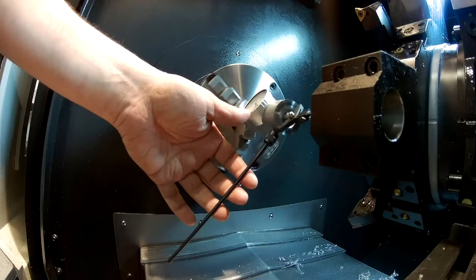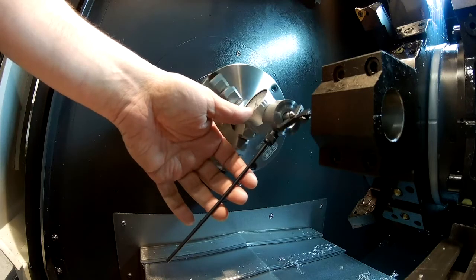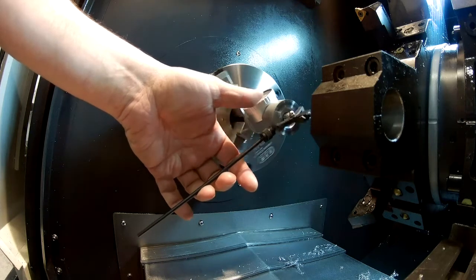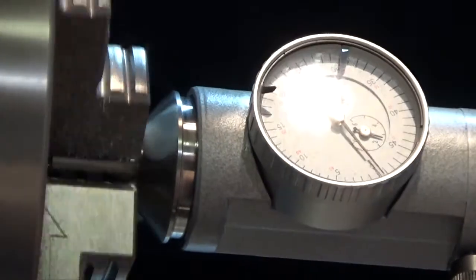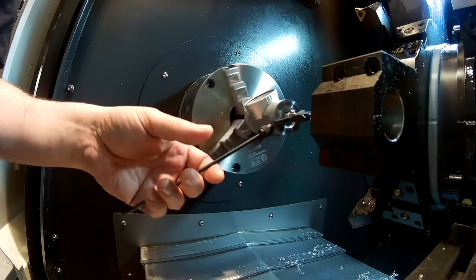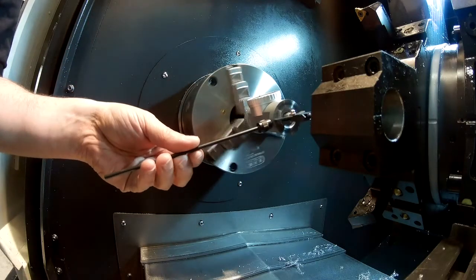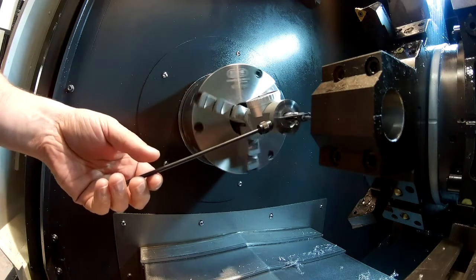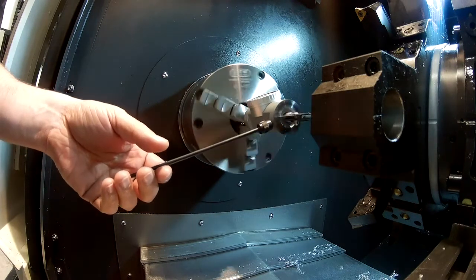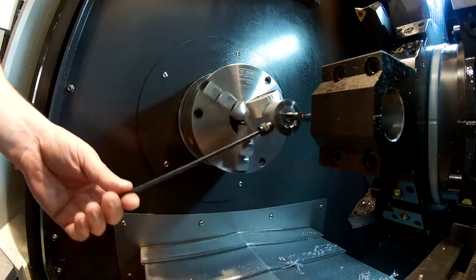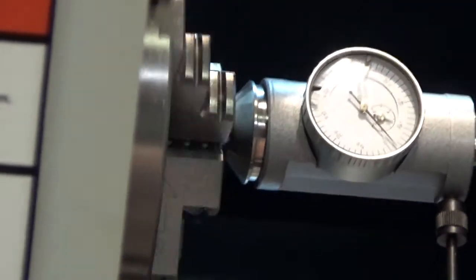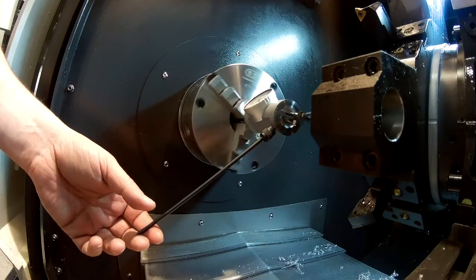So we actually have, this is a half a thou indicator, so we have about a thou runout. We're actually good in the, you actually need to shim the tool holder up a little bit, but for most jobs I mean we're going to be well within tolerance. A half a thou out on a twist drill or something like that is not going to be any big deal. So that's good enough.